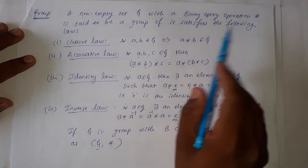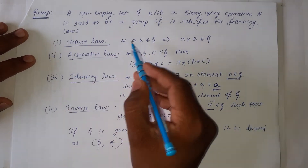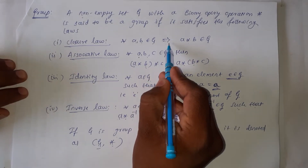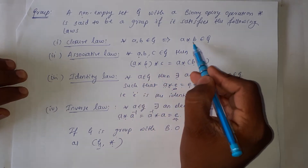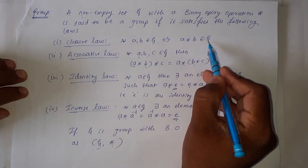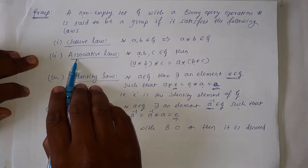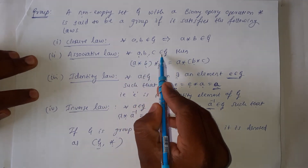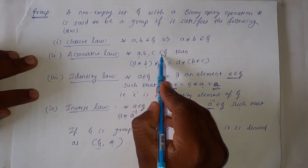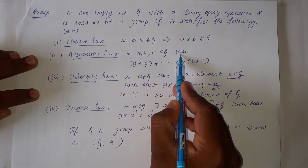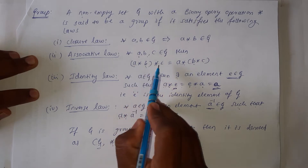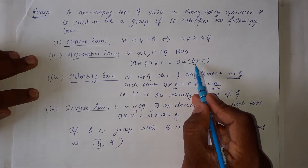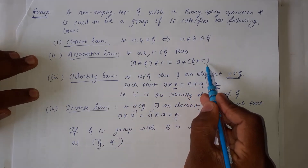The first one is closure law: for all a, b belonging to G, it implies a star b belongs to G. Second one is associative law: for all a, b, c belonging to G, then (a star b) star c is equal to a star (b star c).